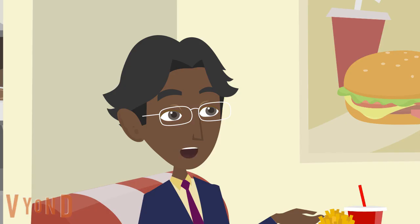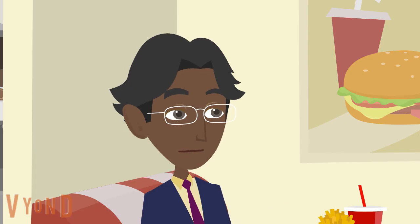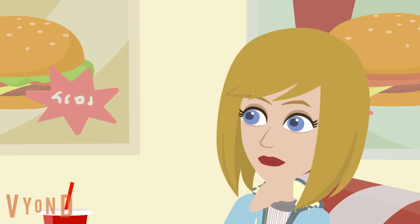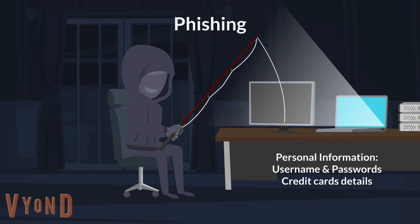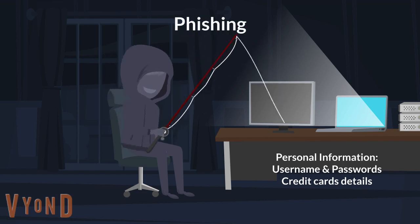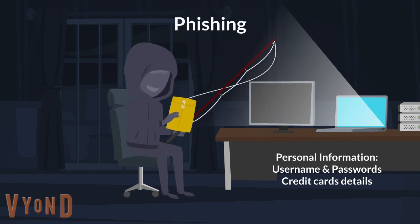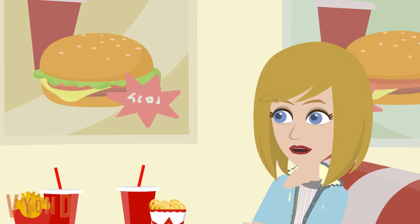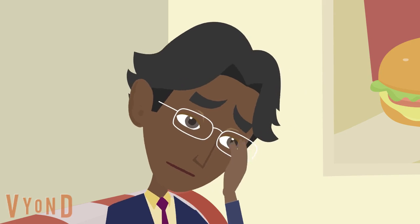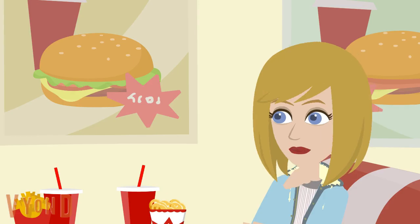What is phishing? Phishing involves sending emails or messages that appear to be from a legitimate source, such as a bank, asking the recipient to provide personal information like usernames, passwords, or credit card details. That sounds scary. Yes, it is.